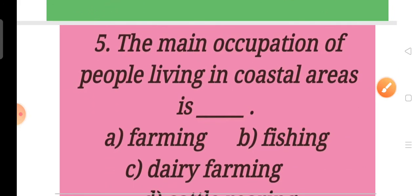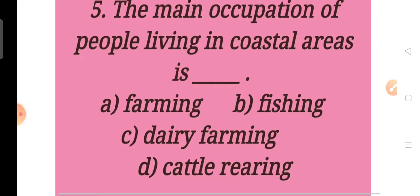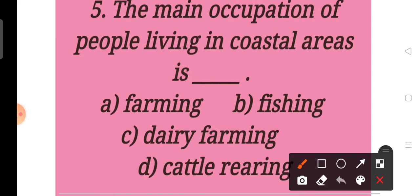Now everyone, move to question number 5. The main occupation of people living in coastal areas is dash. A. Farming, B. Fishing, C. Dairy farming, D. Cattle rearing. Children, our answer will be B. Fishing. The main occupation of people living in coastal areas is fishing.